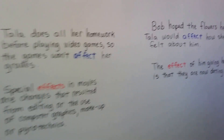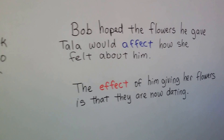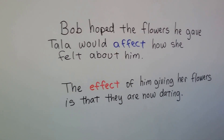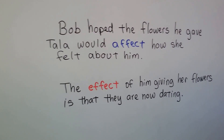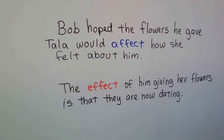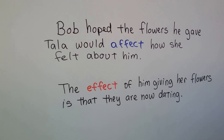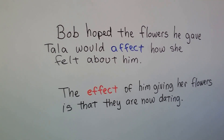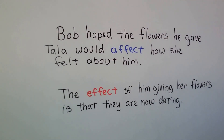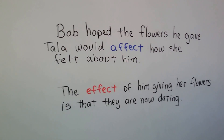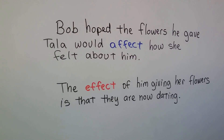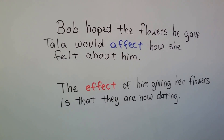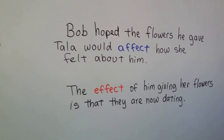Bob hoped the flowers he gave Tala would affect how she felt about him — he hoped it would make a change to how she felt. The effect of him giving her flowers is that they're now dating. So they worked, didn't it?